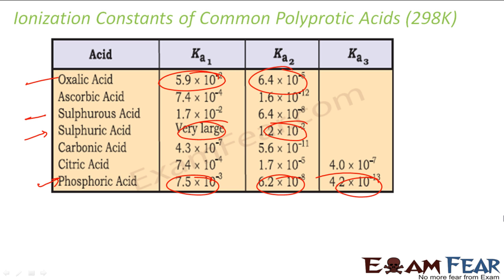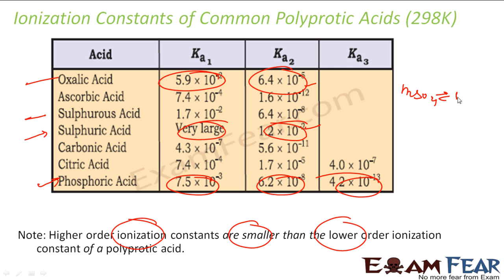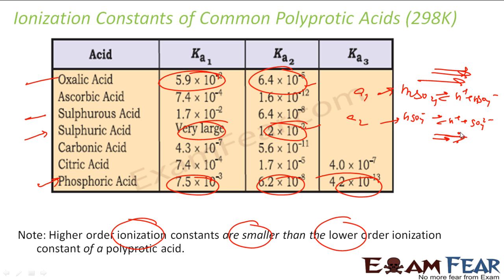Please note: the higher-order ionization constants are smaller and the lower-order ionization constants are bigger. Why? Because the next ionization will not happen as easily. For example H₂SO₄ gives H⁺ and HSO₄⁻, and then HSO₄⁻ gives H⁺ and SO₄²⁻. The first step easily gives one H⁺, but the next H⁺ is difficult to get because it has already lost one proton. So this second reaction happens less in the forward direction, and thus Ka₂ will be less than Ka₁.